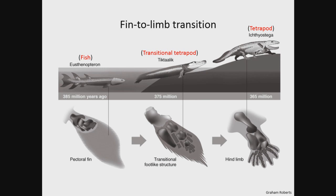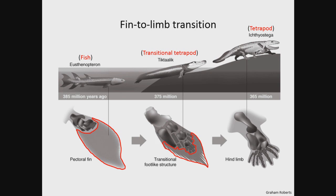About 375 million years ago, lobe-finned fish crawled out of the water and evolved into tetrapods. During this transition, the endoskeletal elements became increasingly more complex, and the exoskeletal elements—the fish fin rays—became increasingly reduced in transitional tetrapods before being completely lost during the later stages of limb evolution. We are interested in identifying some of the molecular mechanisms that contributed to this loss of fin exoskeleton.